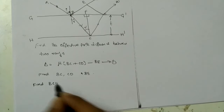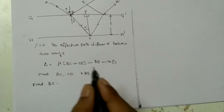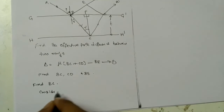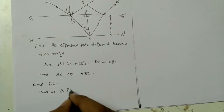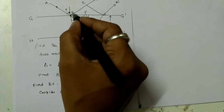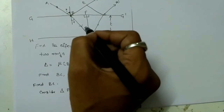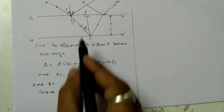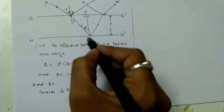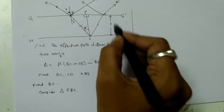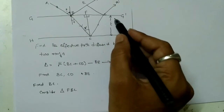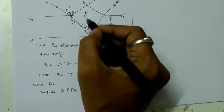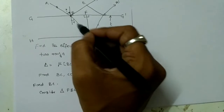To find BC, consider triangle FBC. In this triangle, BC is the hypotenuse and FC is the adjacent side, where FC equals the thickness t of the film.